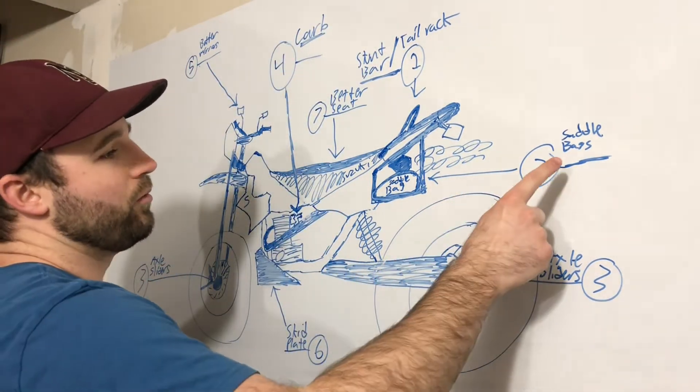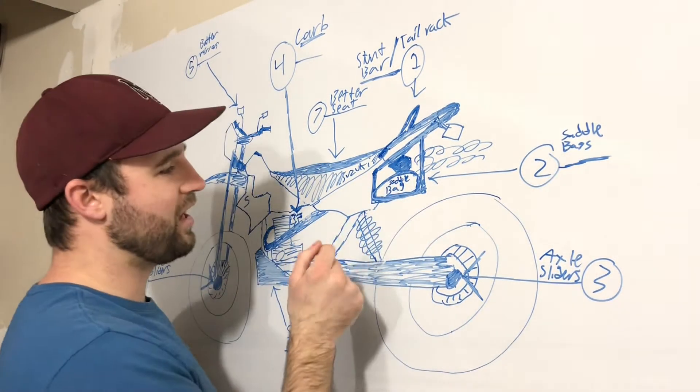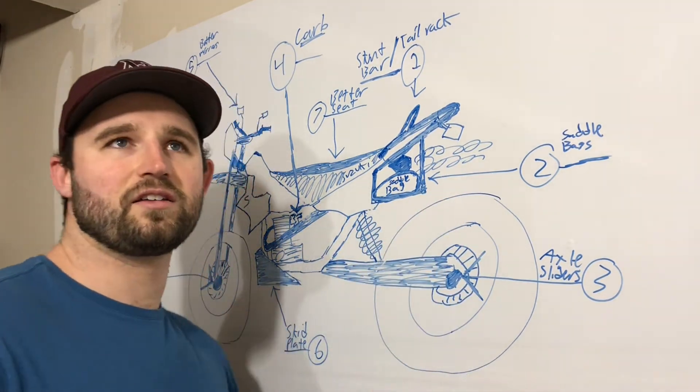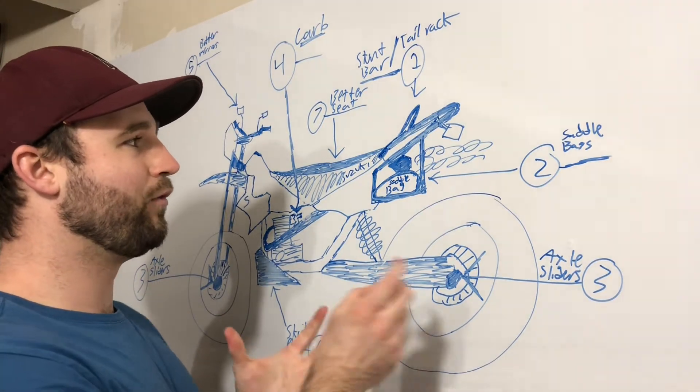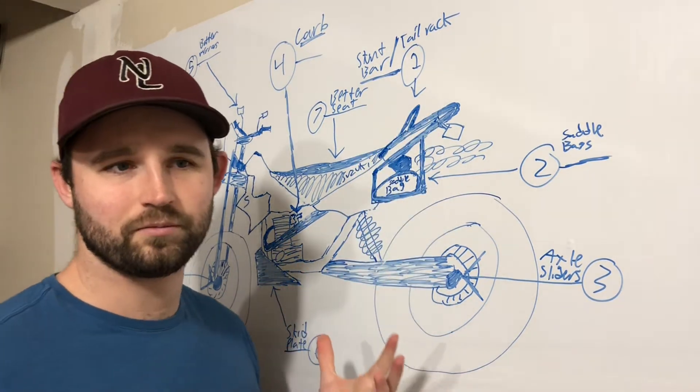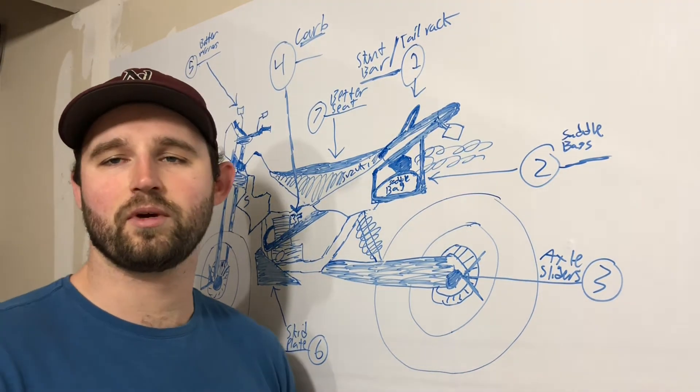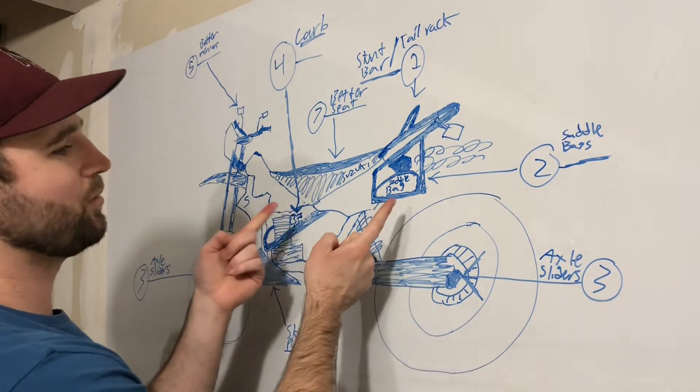Number two would be these saddlebags, which you can see I've carefully drawn in such a nice way. I'm going to try to find some kind of a saddlebag rack for this bike to mount some luggage to that will hopefully mount up with the stunt bar. I still have to kind of find those, so I'm going to see how that works. Might have to do some rednecking a little bit to make it work, but we'll try to make it work. So saddlebags are number two.